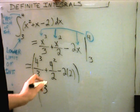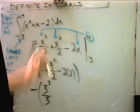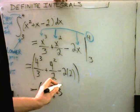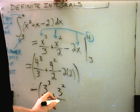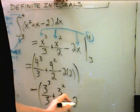So I'll get 3 cubed divided by 3. So now I'm plugging 3's in. Plus 3 squared divided by 2 minus 2 times 3.